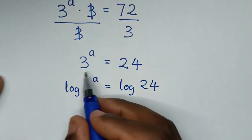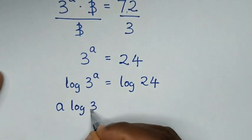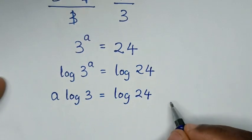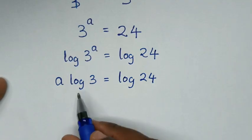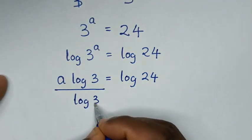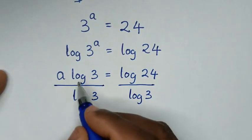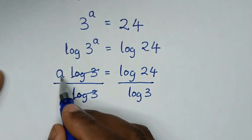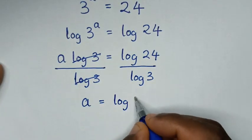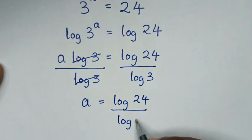So this power of a will move to the front, so it will be a times log of 3 is equal to log of 24. Then we'll divide by log of 3 on both sides, so it will be over log of 3 on each side. This and this will cancel, then it will be a is equal to log of 24 over log of 3.